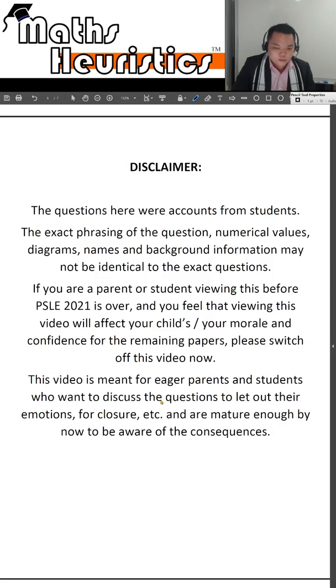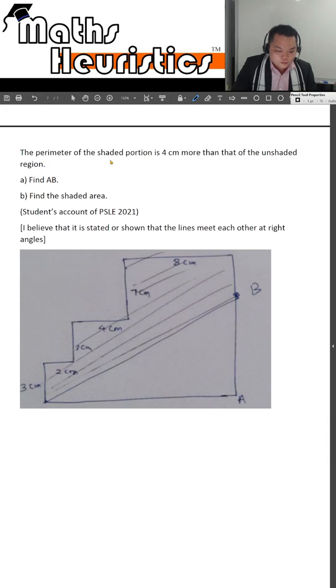Now the perimeter of the shaded portion is 4 cm more than that of the unshaded region. Find the length of AB and find the shaded area. This is a student's account of PSLE 2021 question. I added in a little footnote because I believe that all these lines must meet each other at right angles for the problem to be solvable.